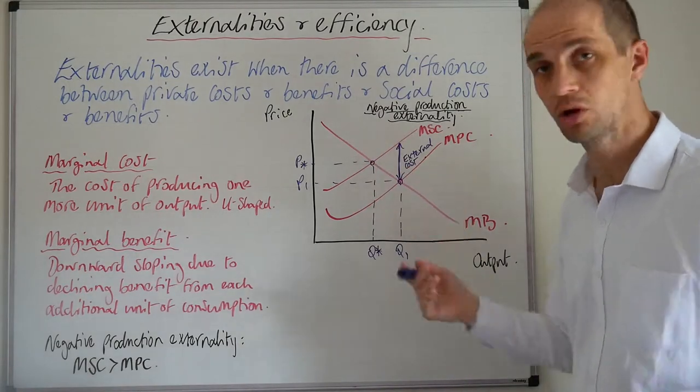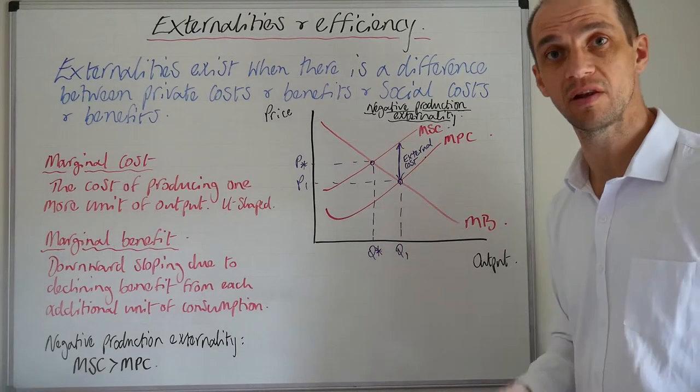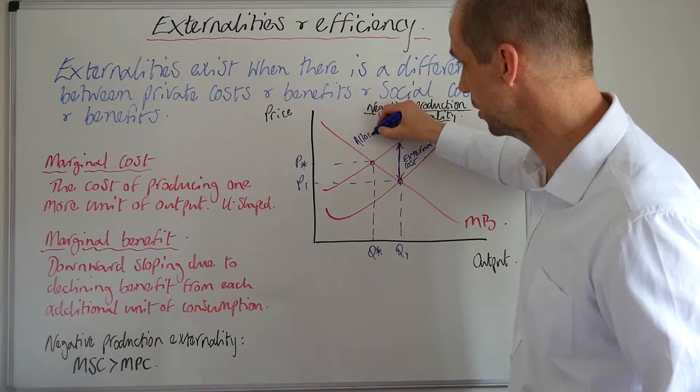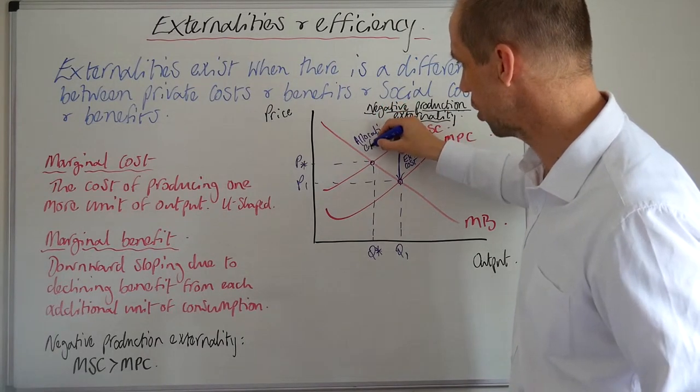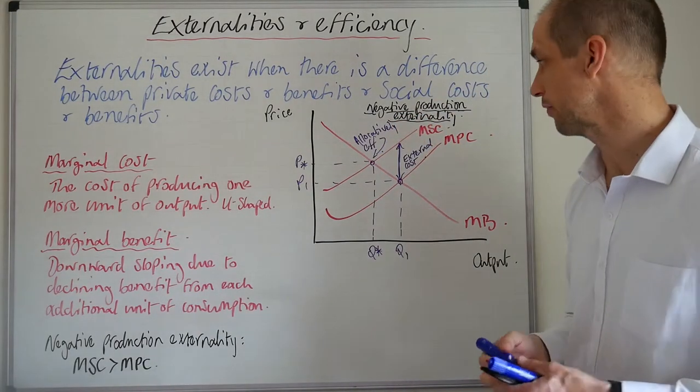So there's our external cost. Meanwhile, our social optimum, the allocatively efficient level of output is here. So this is our allocatively efficient level of output. But unfortunately, we are not yet there. So there it is so far, so good.